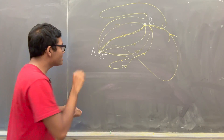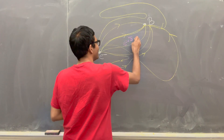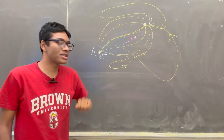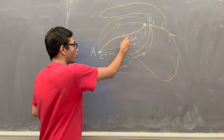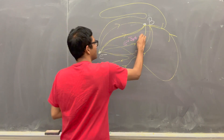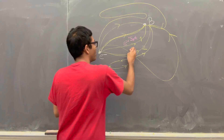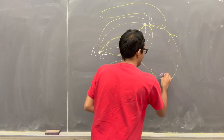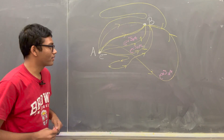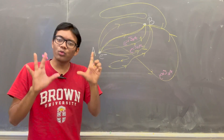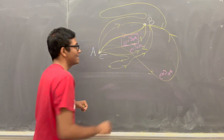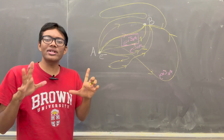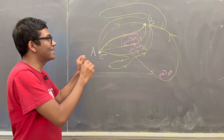Now, Feynman says that each one of these paths is weighted — weighted by some action. It's weighted by this factor e to the iS over ℏ. So path 1 is weighted by e^(iS₁/ℏ), path 2 is weighted by e^(iS₂/ℏ), path 3 is weighted by e^(iS₃/ℏ), and so on. Each path is weighted by a proportionality factor e^(iS/ℏ), where S is the action for that path. The action is a somewhat mysterious number that is associated with each of these paths.